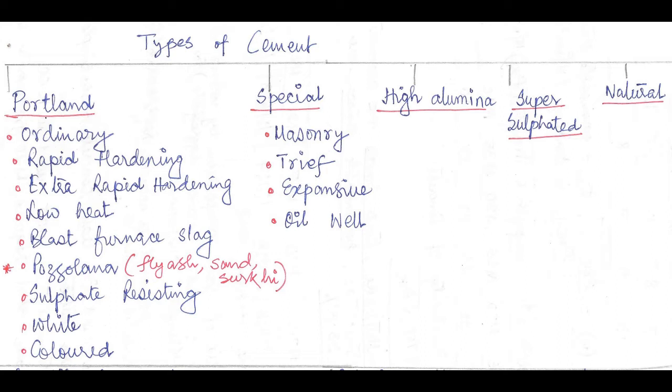Number one: Portland, number two: special, number three: high alumina, number four: super sulfated, and number five: natural.